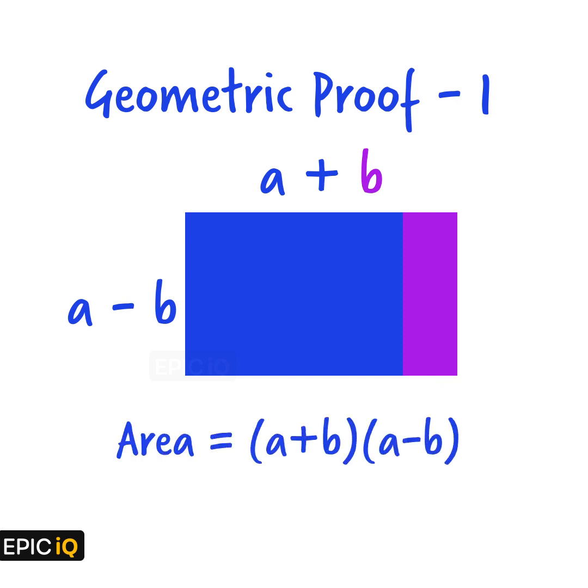The area of this rectangle will be a plus b multiplied by a minus b. Since this rectangle came from rearranging the original region, it must have the same area as the original region. Hence proved.